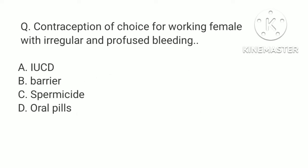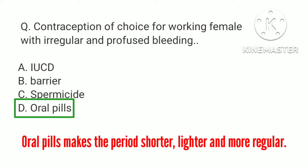Contraception of choice for a working female with irregular and profuse bleeding: a. IUCD, b. Barrier, c. Spermicide, d. Oral pills. The correct answer is d. Oral pills. Oral pills make the period shorter, lighter, and more regular. They also decrease the risk of ovarian cancer, iron deficiency anemia, PID, ectopic pregnancy, etc.